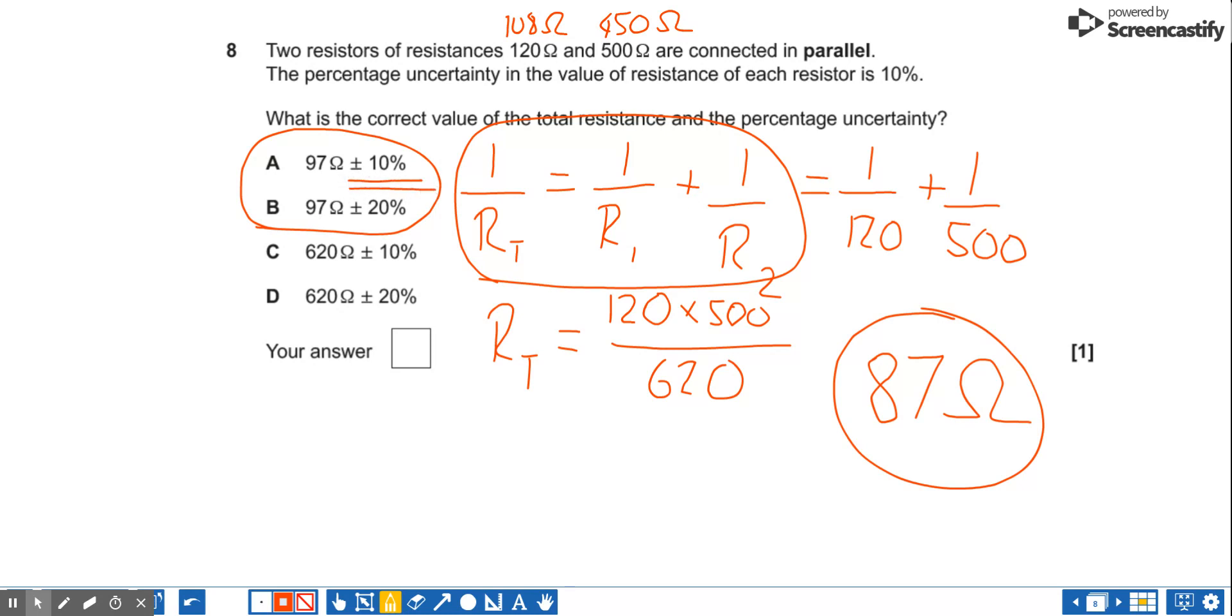So when you're adding quantities together, you add their absolute uncertainties. And because as we've added these two quantities together, they become bigger than when we add their absolute uncertainties together—their percentage uncertainties. The percentage remains the same. So the answer is A.